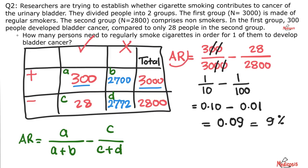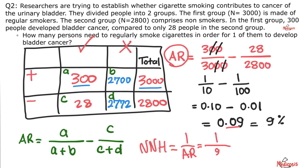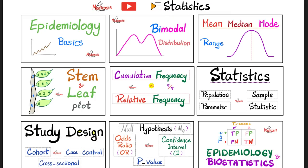Now to find the number needed to harm, flip the attributable risk: 1 over 0.09, which is the same as 100 over 9, which equals approximately 11.11. So roughly 11 persons need to smoke cigarettes in order for one of them to develop bladder cancer attributable to cigarette smoking. Take a look at the other videos in my statistics and biostatistics playlists.